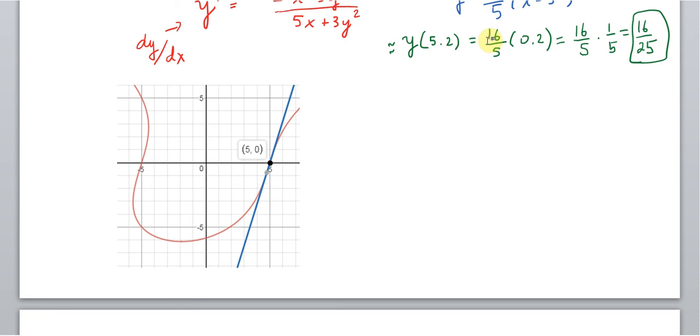All right. So you can see here what I've done as best as I can is try to show you the graph here. So the red here, that's the curve. And you can see here, this is the point (5,0). And the blue here is the tangent line.